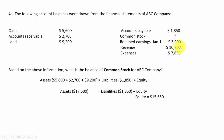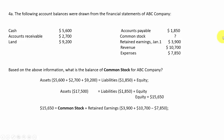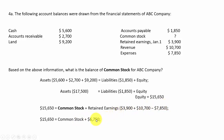If we know total equity is $15,650 and it breaks into common stock plus retained earnings, we can subtract the retained earnings pieces — which total $6,750 — from $15,650. So $15,650 minus $6,750 gives us the common stock balance of $8,900. The answer is common stock equals $8,900.